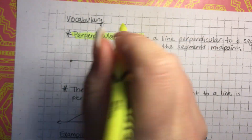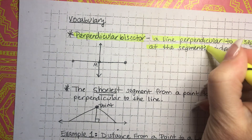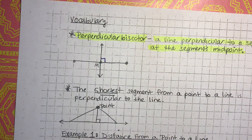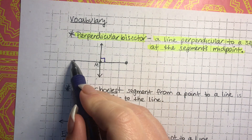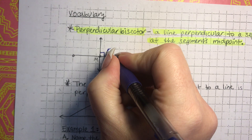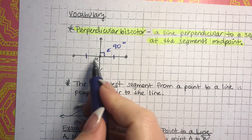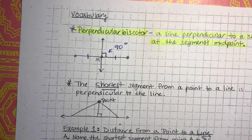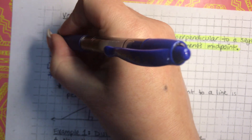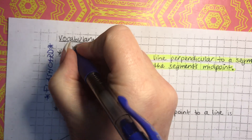A perpendicular bisector is a line that is perpendicular to a segment at the segment's midpoint. So really two characteristics: number one, it's perpendicular, which means it's going to be 90 degrees. The second thing is that this line intersects the segment at its midpoint — meaning the bisector cuts that segment in half, so both sides are equivalent. This should probably be a flash card.